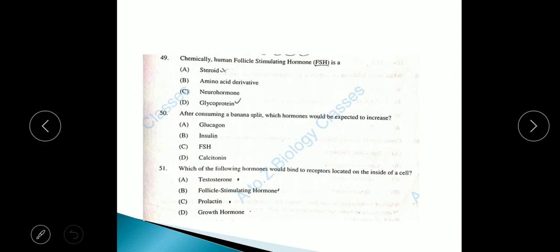Question 49: Chemically, human follicle stimulating hormone is option D, glycoprotein. Question 50: After consuming a banana split, which hormone would be expected to increase? The answer is option B, insulin.